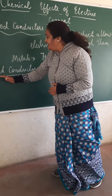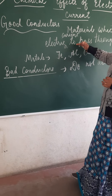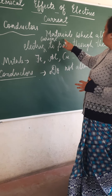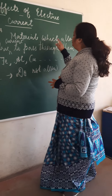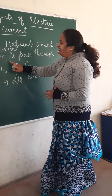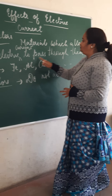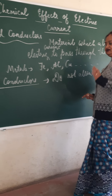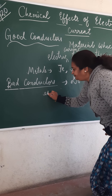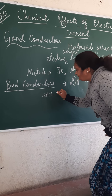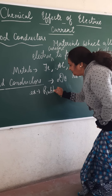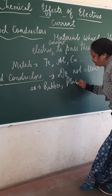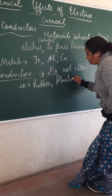So for bad conductors, it is exactly the opposite. Materials which do not allow electric current to pass through them are known as bad conductors. Common examples are rubber, plastic, and so on.